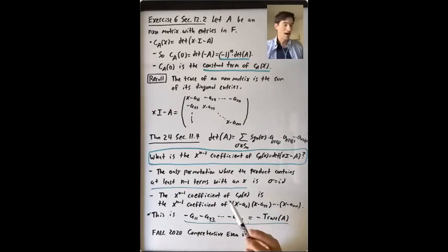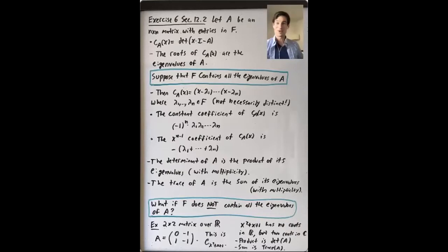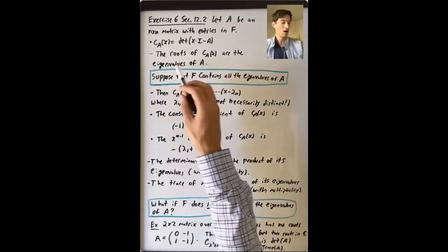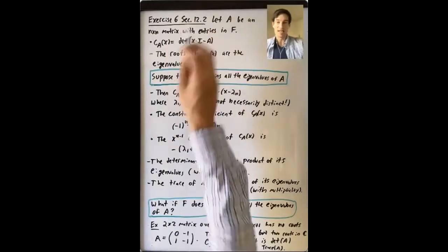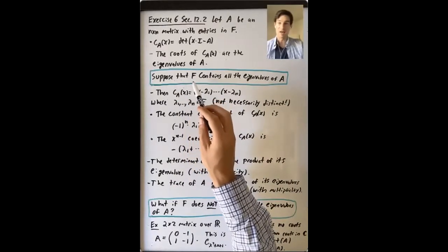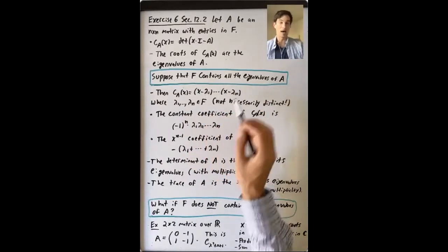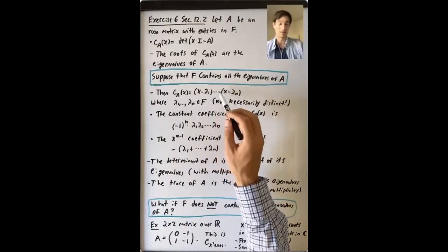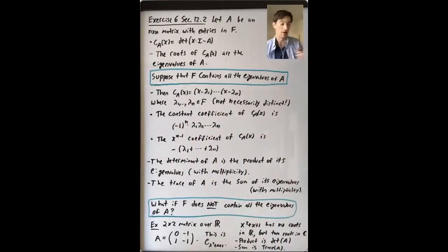I'll say a little bit more about how to think about these coefficients of the characteristic polynomial, because there's one other big thing we know: the roots of the characteristic polynomial are the eigenvalues of the matrix A. Suppose that the field F contains all the eigenvalues of A. Then the characteristic polynomial factors into a product of linear factors, (x - lambda_1)(x - lambda_2)...(x - lambda_n), where the eigenvalues are elements of F — not necessarily distinct, but all elements of F.